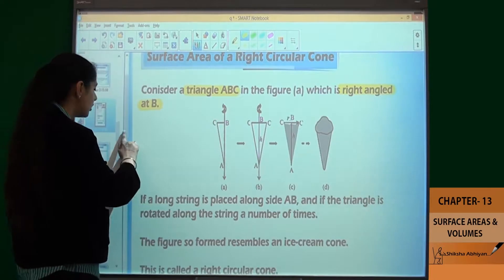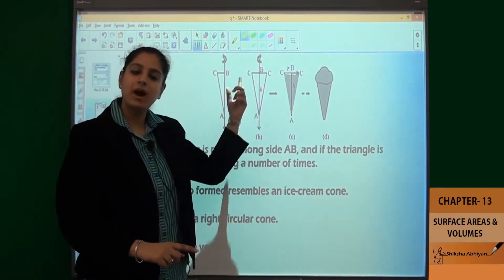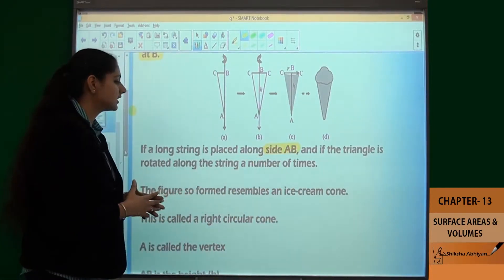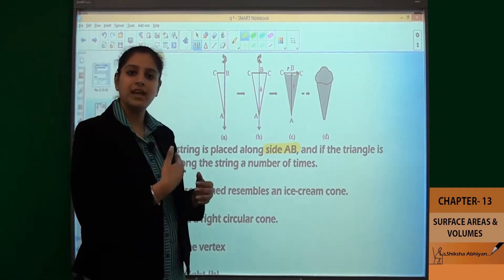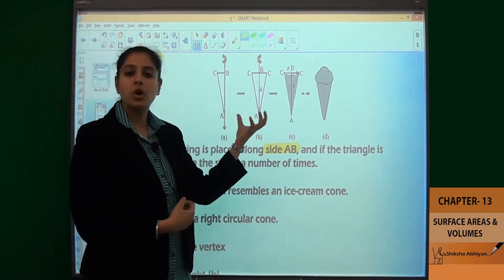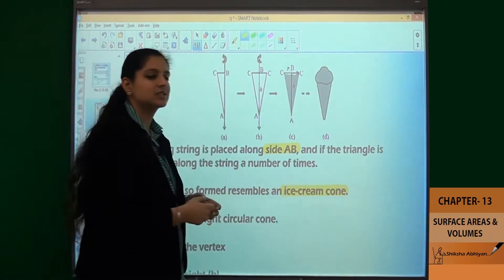So if a long string is placed along side AB, and the triangle is rotated along the string a number of times, then the shape that is obtained, the figure that is obtained, it looks like an ice cream cone.